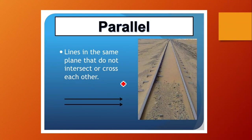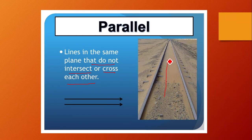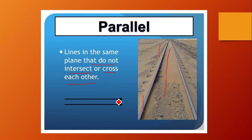Next, parallel lines are lines in the same plane that do not intersect or cross each other. As you can see, if I extend them from both sides they do not intersect or cross each other at any point — that is the key characteristic of parallel lines.